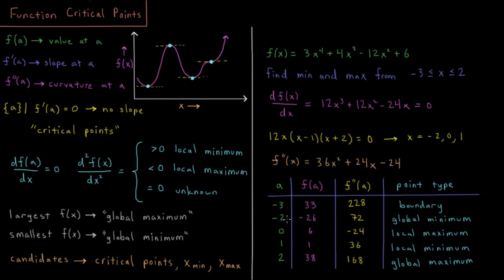Looking at our function, we have the lowest value of our region (x = −3), the largest value (x = 2), and three critical points — all five points to evaluate to find the largest and smallest values inside the region. No other points are candidates for the global maximum or global minimum. Evaluating the function at these points gives 33, −26, 6, 1, and 38. The second derivative evaluates to 228, 72, −24, 36, and 168 at those same points.